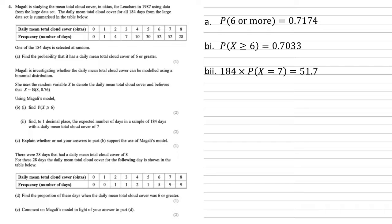Part C, we need to explain whether or not our answers to part B support the use of Magali's model. So firstly let's look at the probability of cloud cover of 6 or more. According to the table, that was 0.7174, that's our answer for part A. In the model of part B we got 0.7033. Those two are approximately equal to each other, so that's looking good. We also need to use part 2 of part B, which was the expected number of days with the cloud cover of 7. Well our model said 51.7. The table says there were 52, again approximately equal to each other, so that suggests that Magali's model is supported. It's very important for this question that we use both of those pairings, the 0.7174 and the 52, to back up our answer.